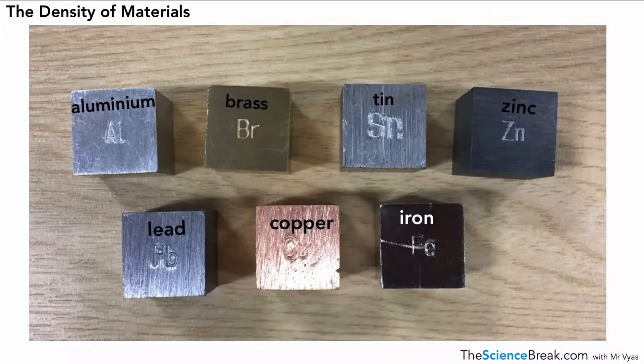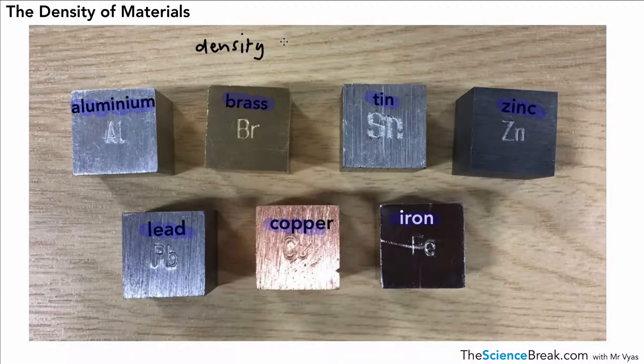Hello and welcome. Today we're looking at the density of materials. What we have here is a photograph of a bunch of metal blocks. These are all different types of metal, but what you might notice about them is that they all look like they're the same size. We call these density blocks.